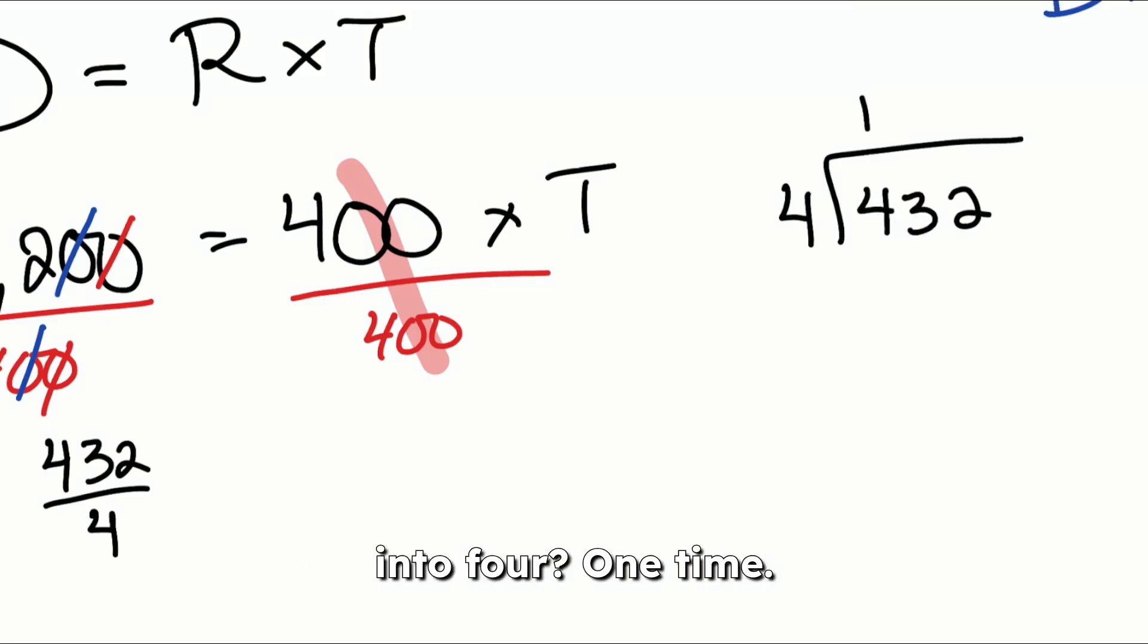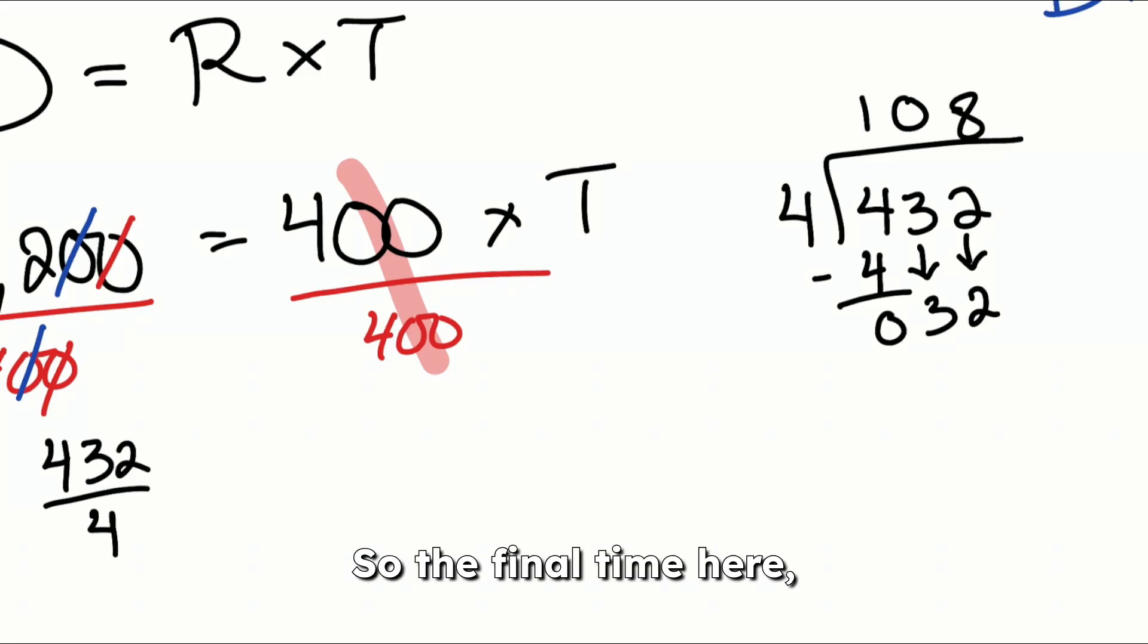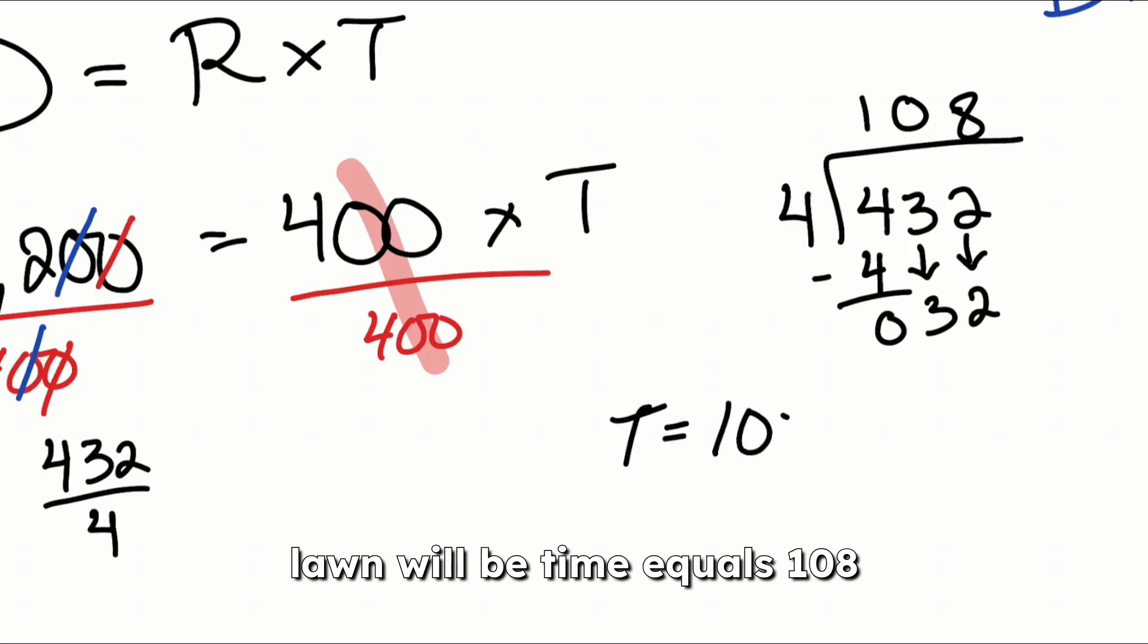4 goes into 4 one time. That's going to be a zero. Drop that three. 4 doesn't go into three. So that's going to be zero. And then drop the two. 4 goes into 32 eight times. So the final time here, the time it'll take to mow this lawn will be time equals 108 minutes.